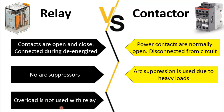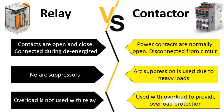The last difference is that an overload relay is not used with the relay, because relays are meant to switch loads that do not require a separate overload relay — the overload protection is done through a circuit breaker. Whereas since contactors are used mostly to switch electric motors, which require a separate overload relay, the overload relay must be installed with the contactor to provide overload protection for the motors.